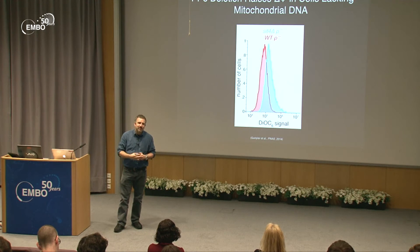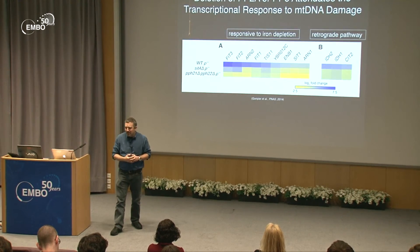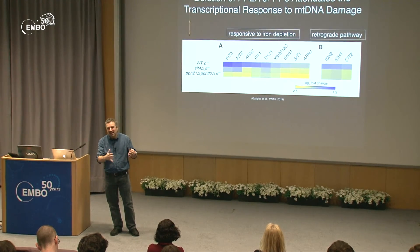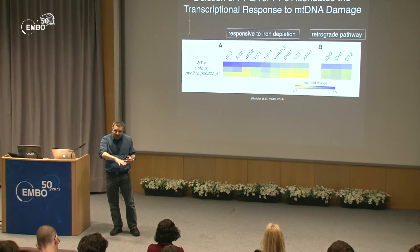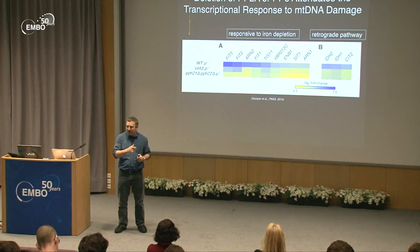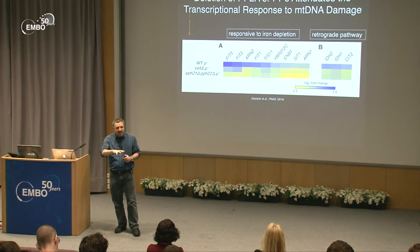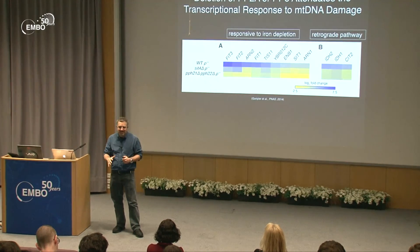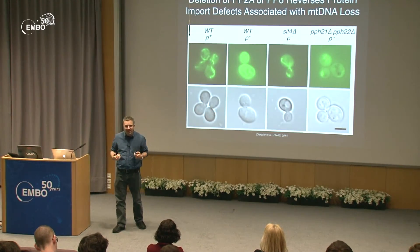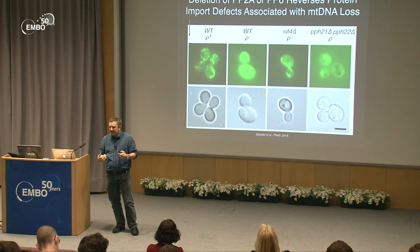Additional evidence comes from the transcriptional response to mitochondrial DNA damage. When membrane potential increases, this transcriptional response is reversed. We see two classes of genes greatly affected by mtDNA loss: those responsive to iron depletion and those in a retrograde pathway activating TCA cycle genes. In phosphatase-deletion mutants lacking mitochondrial DNA, this transcriptional response is diminished, suggesting higher potential.